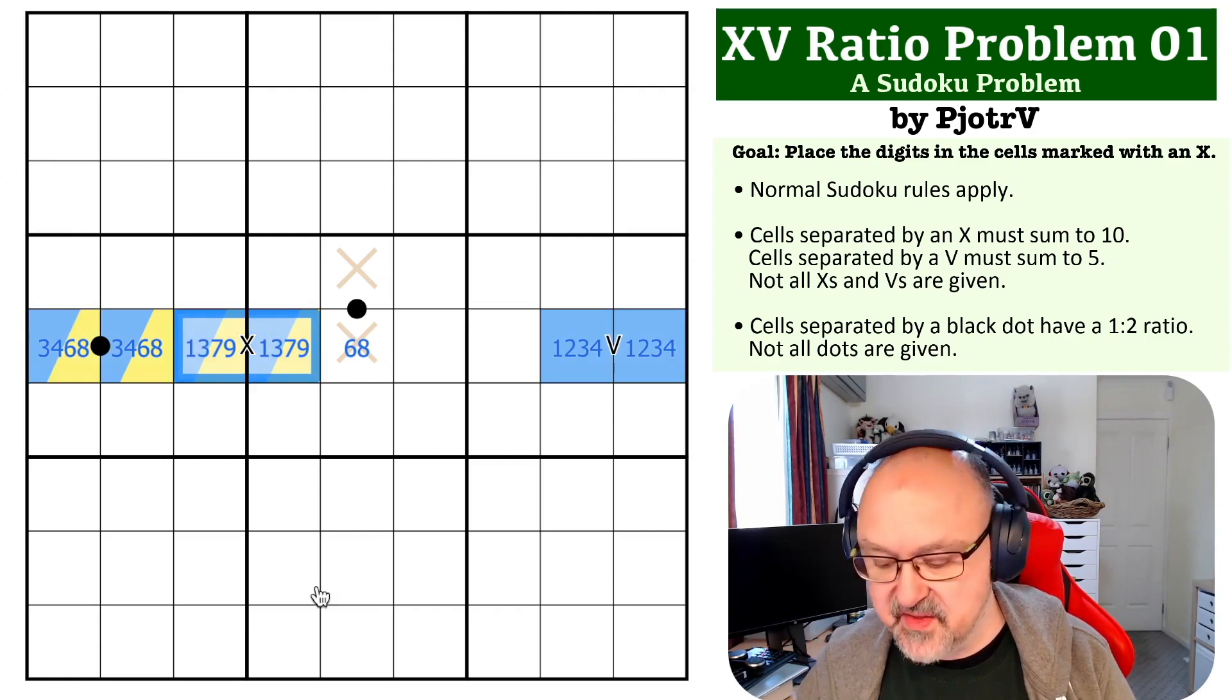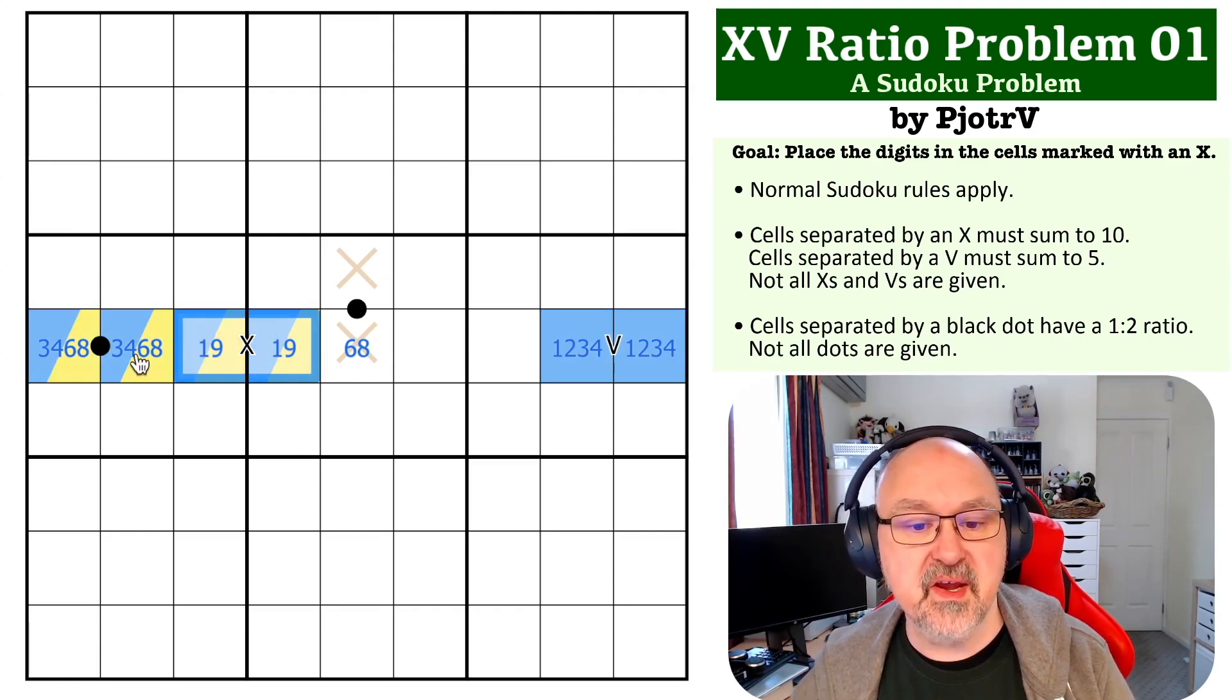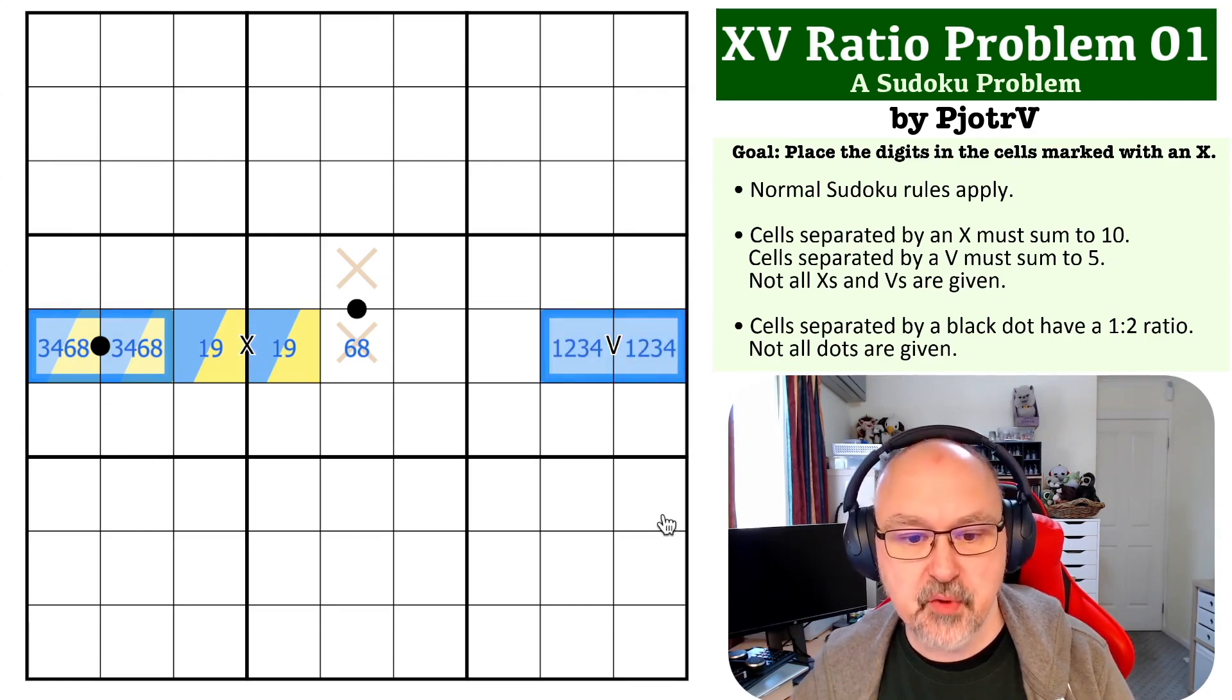So I can never make this three-seven, because if I put a three in here, this becomes four-eight, and this becomes four-one, and the whole thing is broken.